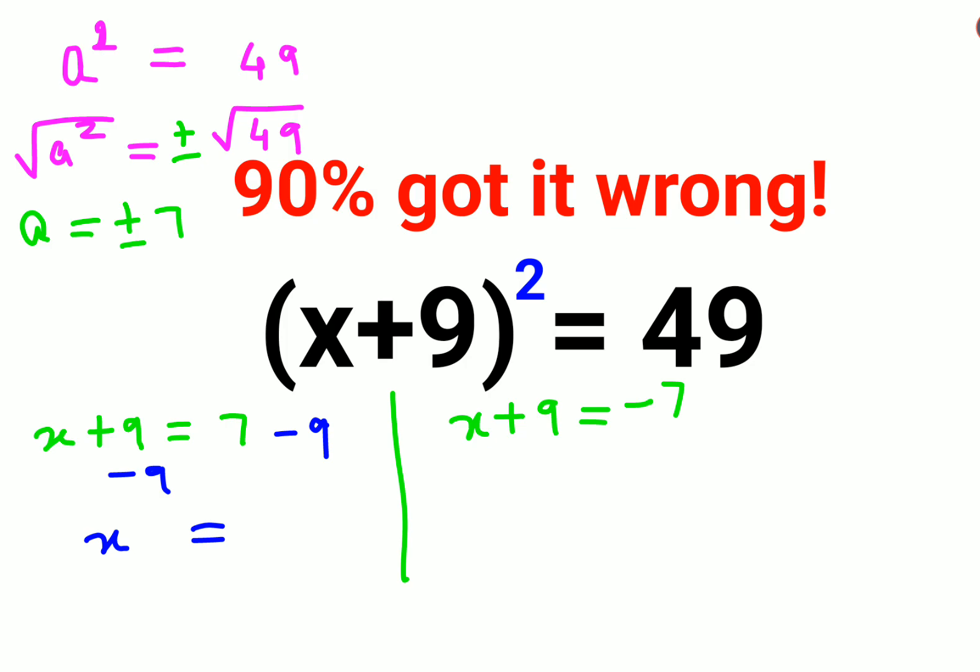7 minus 9 gets you minus 2. The sign will always be of the bigger number.